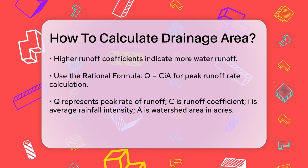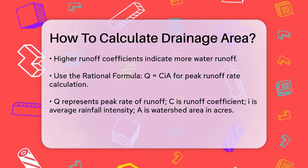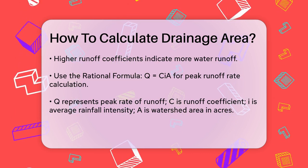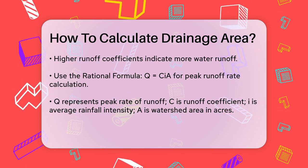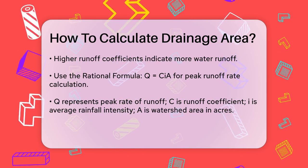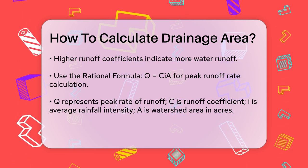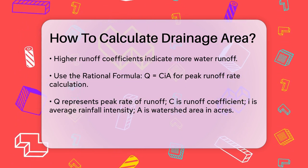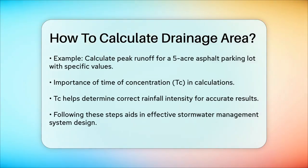Here's a simple example. If you have a parking lot that is 5 acres in size, and the runoff coefficient for asphalt is 0.9, and the average rainfall intensity is 2 inches per hour, you can plug these values into the formula to find the peak runoff rate.